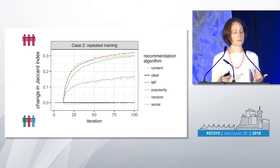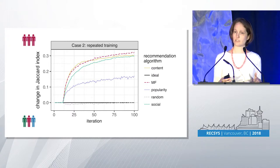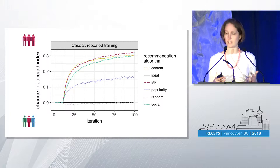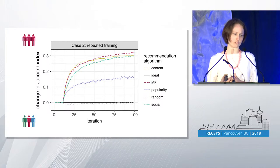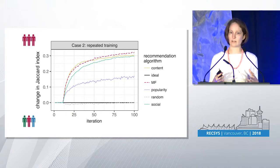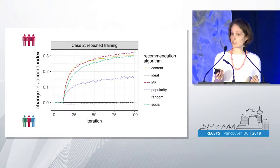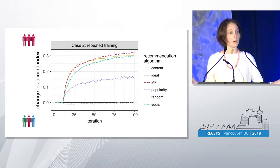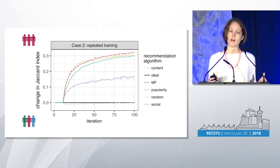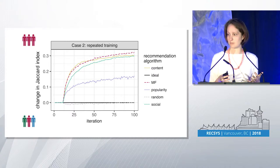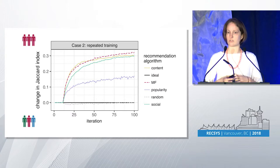In the second case with repeated training, we expose users to ten iterations of random recommendations, train each system, and then retrain every consecutive iteration based on all previous — algorithmically confounded — data. Homogenization skyrockets. Matrix factorization, content filtering, and social filtering all show a lot of homogenization. Looking relative to all users, popularity homogenizes across the population the most, while those other three styles homogenize within populations — like filter bubbles.